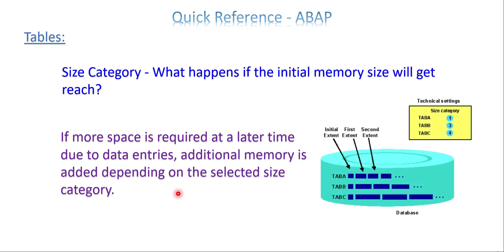From the SAP help documentation, you can see the initial extents for tables A, B, C — with selection categories one, three, four — and the additional memory that gets added depends on how this option was selected. This is the way the additional memory is going to be increased.